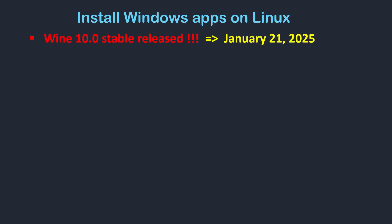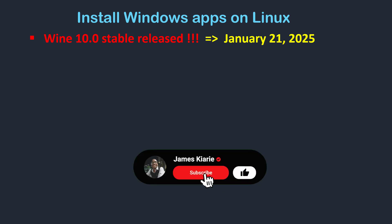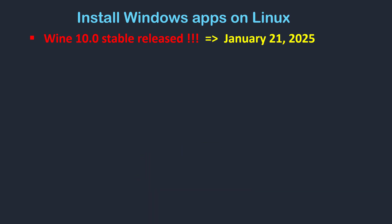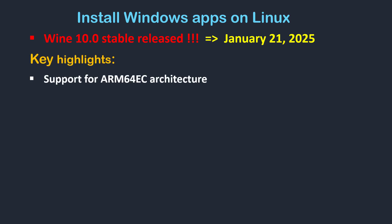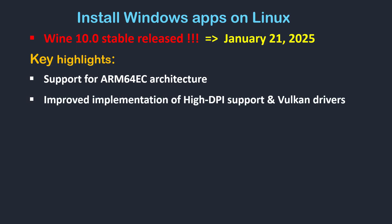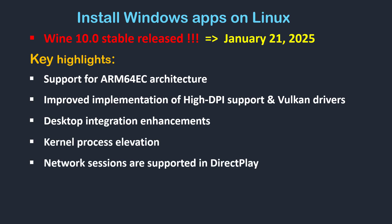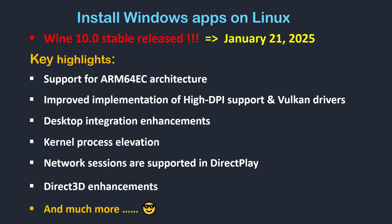The biggest news at this moment is that Wine 10.0 stable has been released on January 21st, 2025. It comes with over 6,000 individual changes according to the release notes. Some of the key highlights include support for ARM64 EC architecture, improved implementation of high DPI support and Vulkan drivers, a number of desktop integration enhancements, network sessions supported in DirectPlay, and three Direct3D enhancements and much more.